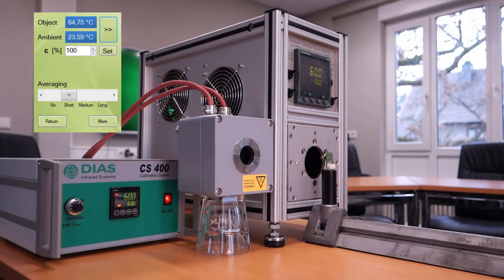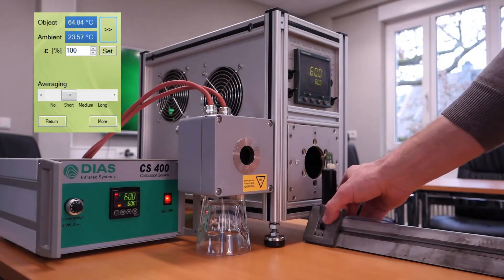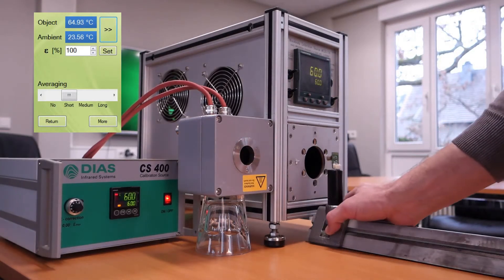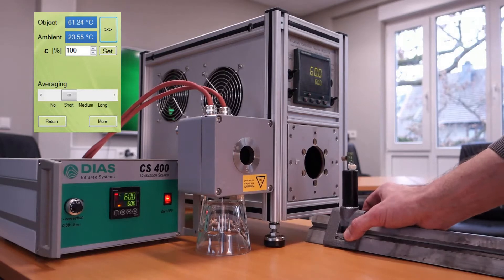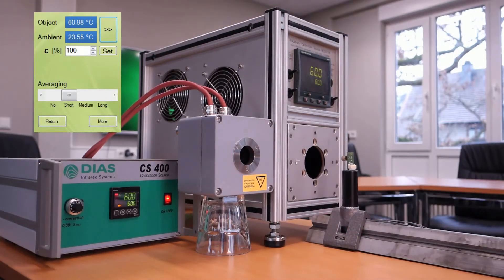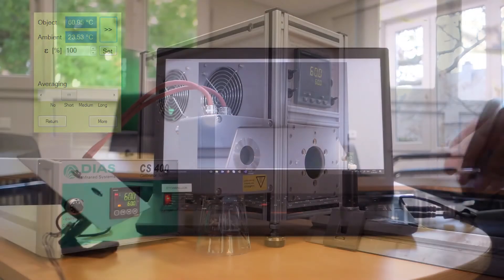In one of our previous videos about temperature measurement with calibrated sensors, we demonstrated how to adjust the emissivity value in order to have the correct temperature displayed. In most applications, the distance between the object and the sensor is fixed, so we can use our sensors right away.